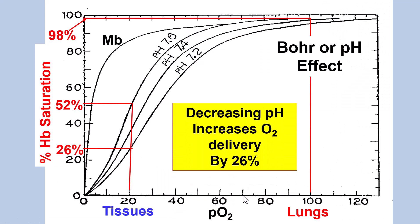The Bohr effect on hemoglobin is a pH effect. Myoglobin binds oxygen in a hyperbolic fashion with no sigmoidal character. However, hemoglobin has a sigmoidal, or cooperative, binding curve. Out in the lungs at pH 7.6, hemoglobin has a higher affinity for oxygen than it does at pH 7.2 out in the tissues, and that allows better release of oxygen from hemoglobin in the tissues.